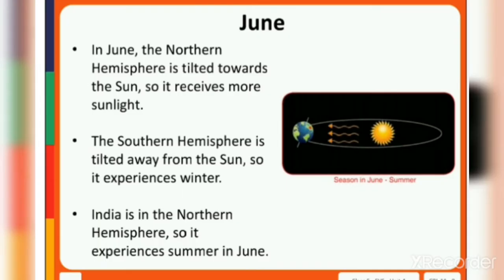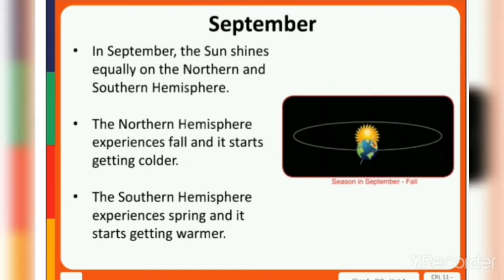In June, summer season is experienced. In September, the sun shines equally on the Northern and Southern Hemisphere. The Northern Hemisphere experiences autumn and it starts getting colder, and the Southern Hemisphere experiences spring and it starts getting warmer. In India, autumn season starts in September, and in the Southern Hemisphere, spring season begins.